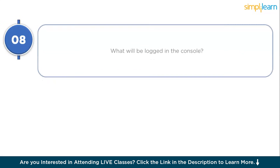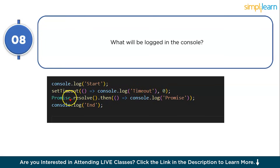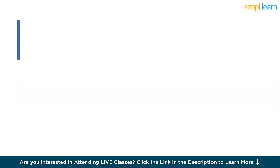Question 8: what will be logged to the console? The code has console.log('start'), setTimeout, Promise.resolve, and console.log('end'). console.log('start') is synchronous and prints first. setTimeout schedules a macro task with 0ms delay. Promise.resolve schedules a micro task. console.log('end') is synchronous. So the output order is: start, end, promise, timeout.